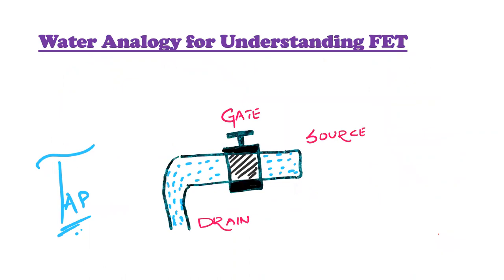I'd like to explain FET operation with the help of a simple water analogy. We have a water tap where water flows from a nozzle. This one is the source and this one is the drain. The center notch can stop or allow that water — that is the gate. Water comes from source to drain, and in between the gate plays a crucial role.